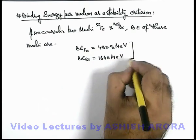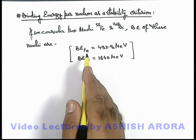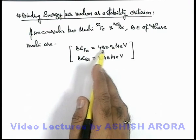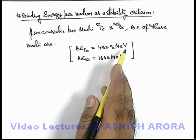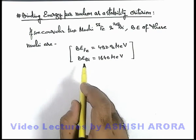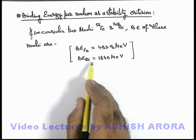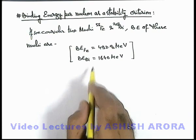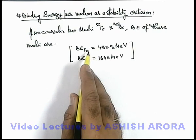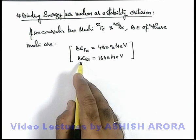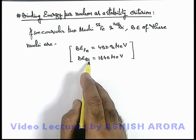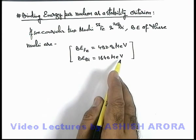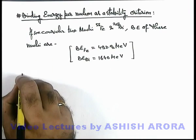If we just have a look at the two values, we can see that when the iron nucleus is formed, 492.8 MeV energy is released, and at the time of formation of the bismuth nucleus, 1640 MeV is released. So it appears that bismuth is more stable compared to iron, because to split the bismuth nucleus into its constituents more energy is required. But if we just have a look at binding energy per nucleon of these 2 nuclei...